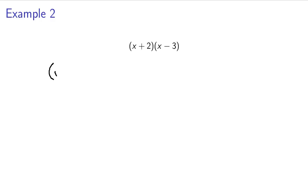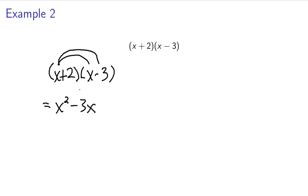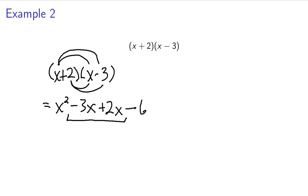We have x plus 2 times x minus 3. Well, x times x is x squared, and x times negative 3 is negative 3x, and then we also have plus 2x, and 2 times negative 3 gives us negative 6. We have two like terms we can combine, but in this video I'm only talking about distribution — combining like terms will be in the next video, so we'll leave this as our answer for now.